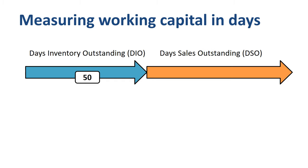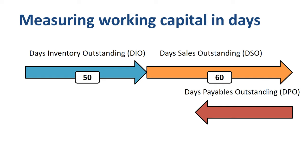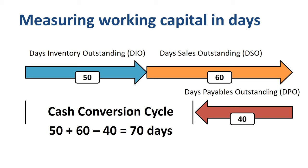Once the product is sold to the customer, a company has open invoices for which payment has not yet been received. The actual length of time it takes for customers to pay is measured as days sales outstanding (DSO) — in this example, 60 days. So this company is financing 50 days worth of inventory and 60 days worth of receivables. Fortunately, the company does not have to pay its suppliers immediately, and has 40 days payable outstanding (DPO). In summary, the cash conversion cycle — the number of days between cash out and cash in — is 50 plus 60 minus 40, which is 70 days.